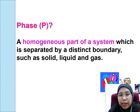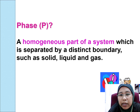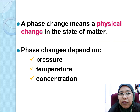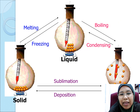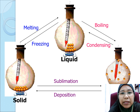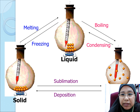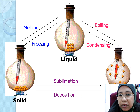A phase is a homogenous part of a system which is separated by a distinct boundary — for example, solid, liquid, and gas. A phase change means a physical change in the state of matter. Phase changes depend on pressure, temperature, and concentration. In summary, the changes of the state of matter can be interpreted in a diagram where you have melting, freezing, boiling, condensing, sublimation, and deposition.